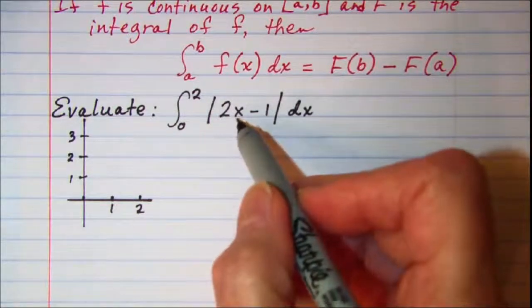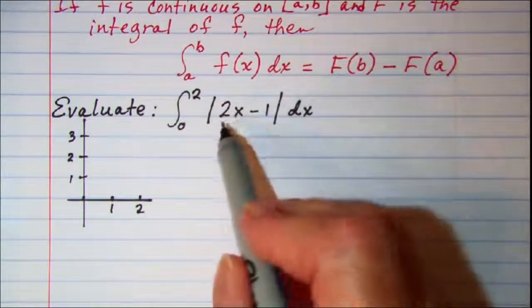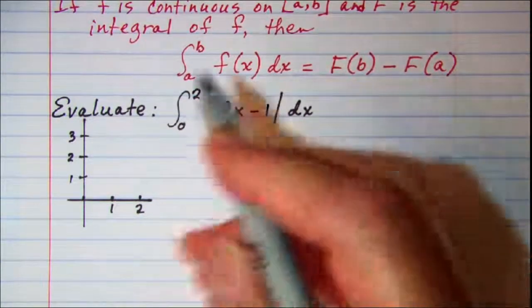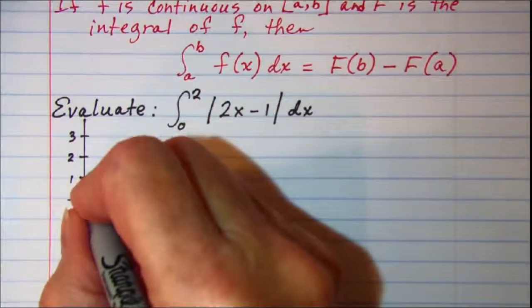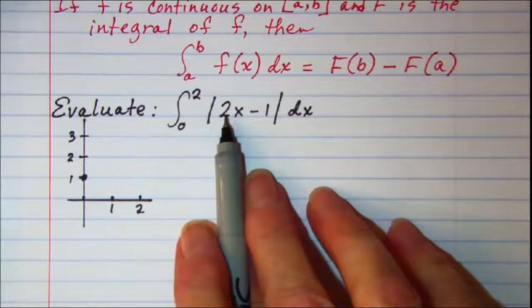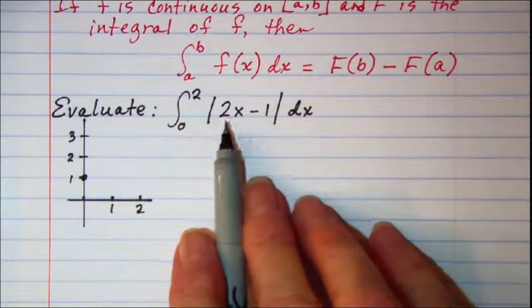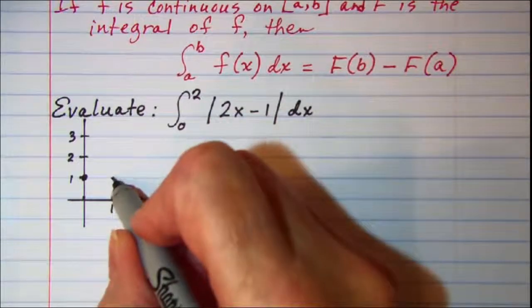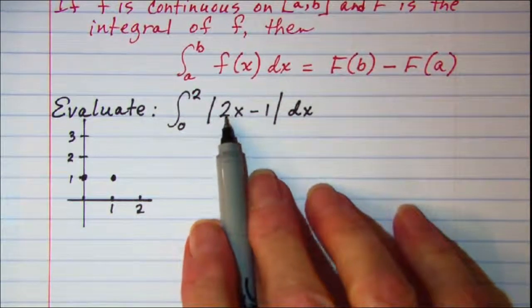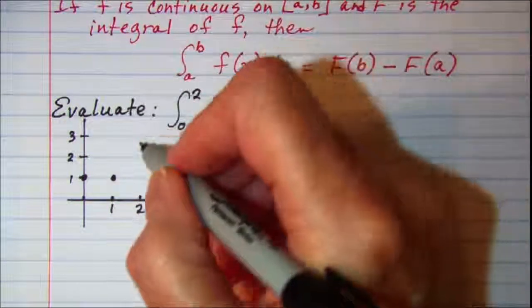When x is 0, since we're going from 0 to 2, we have the absolute value of negative 1, which is 1. So we have this point. When x is 1, we have 2 times 1 minus 1, which is 1. When x is 2, we have 2 times 2 is 4 minus 1 is 3, so we have 3.